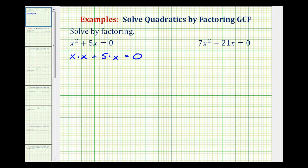In this form, it's much easier to see that both of these terms have a common factor of x, which we need to factor out. So if we factor out the x, we'd be left with the quantity x plus 5 equals zero.